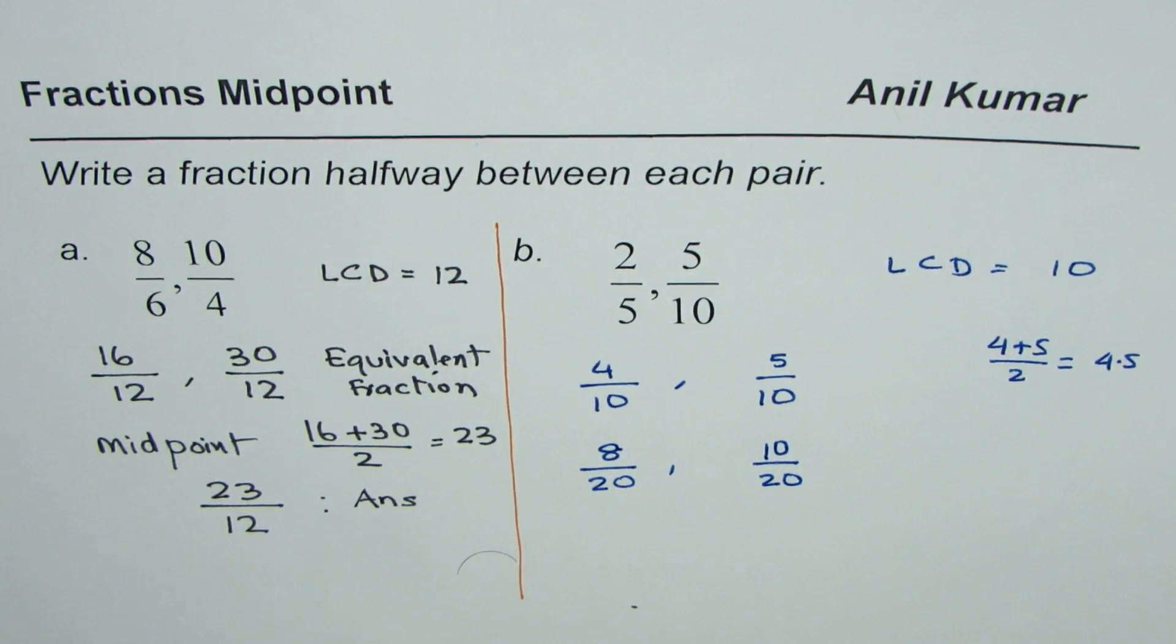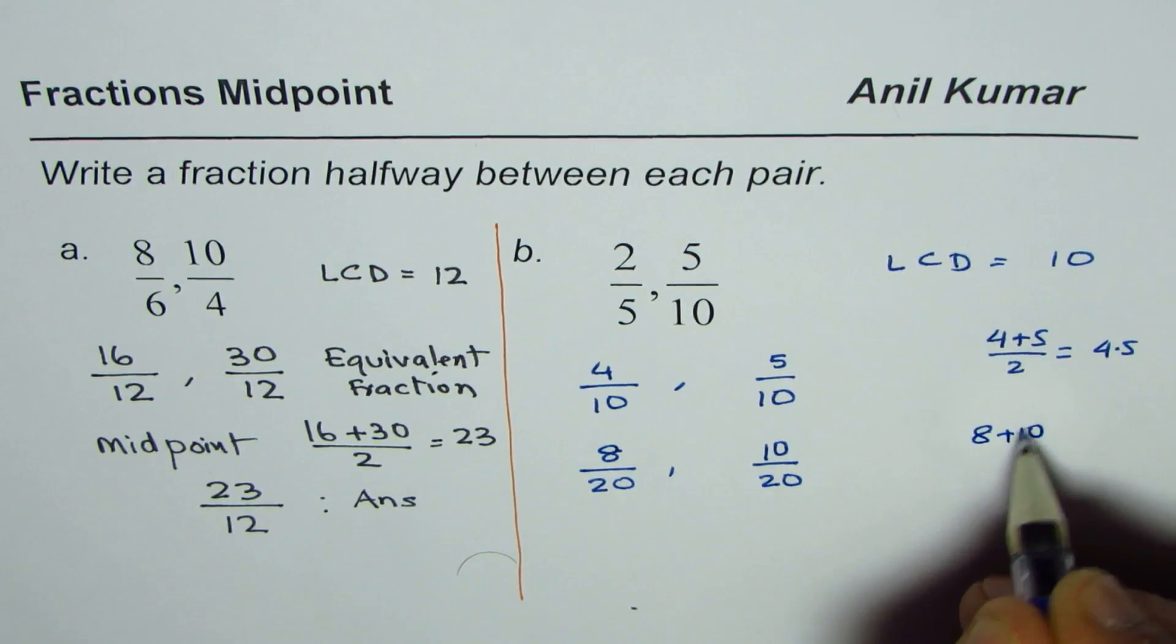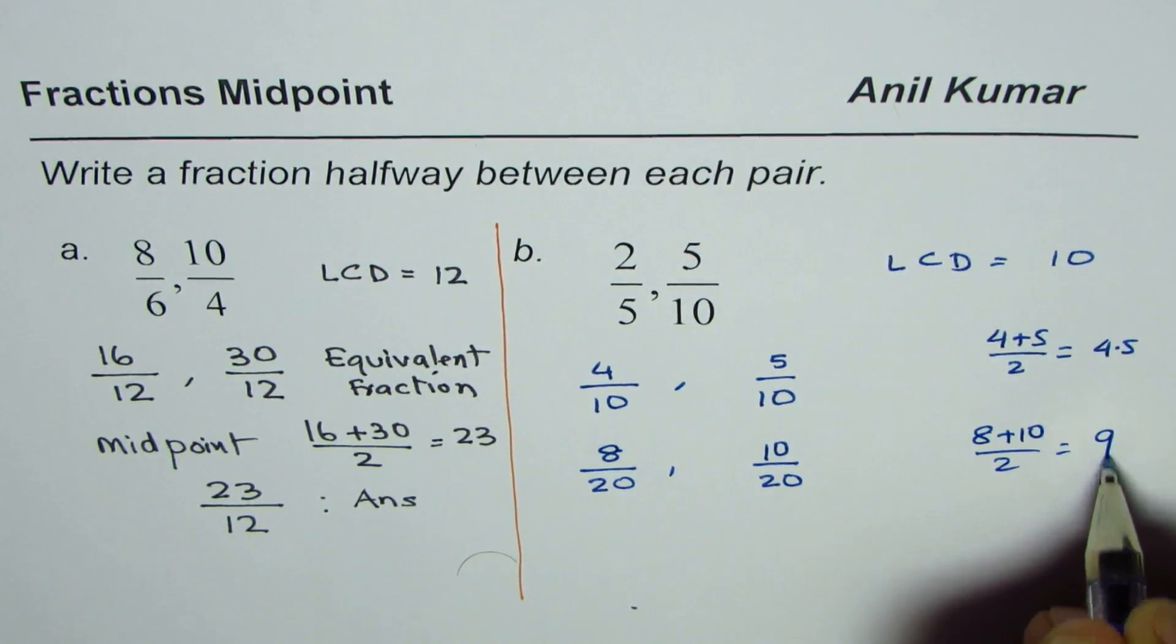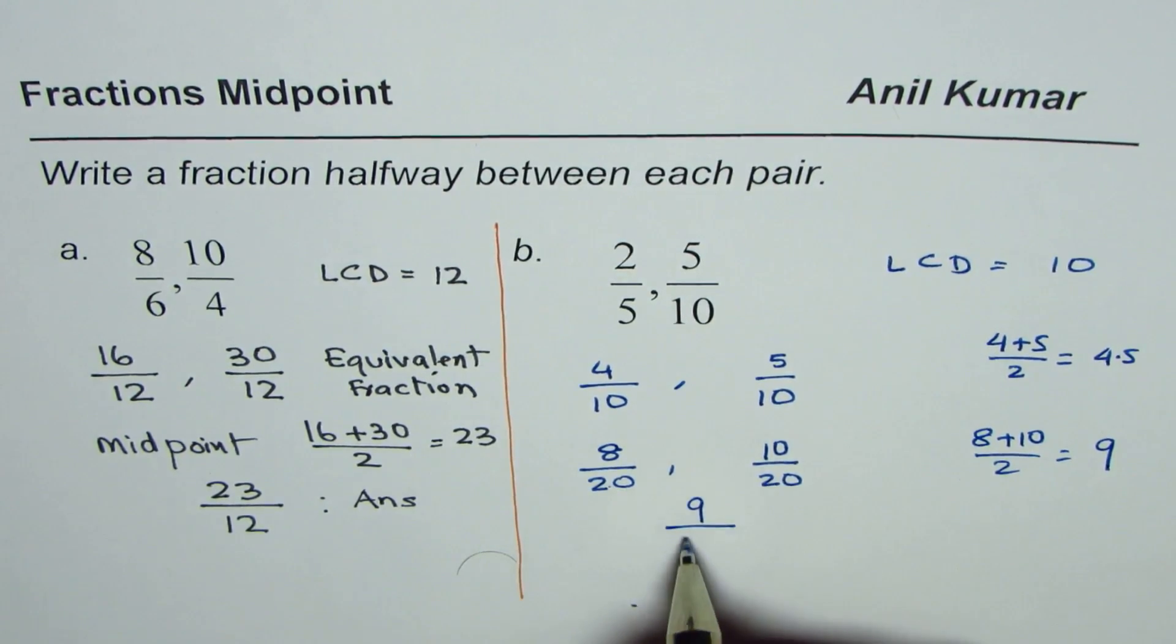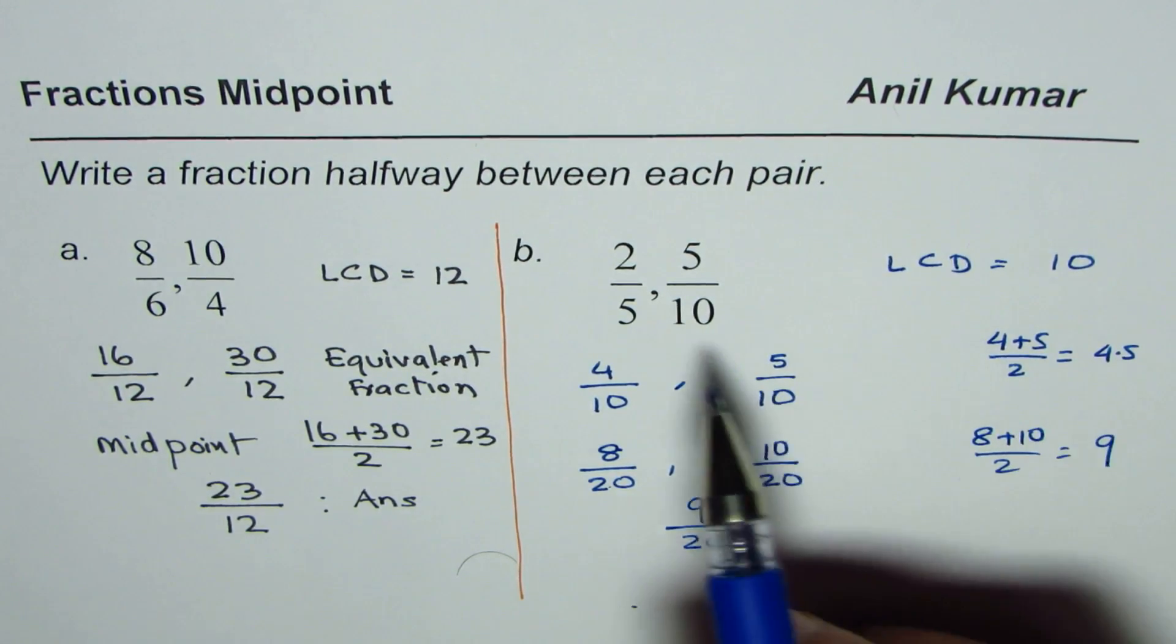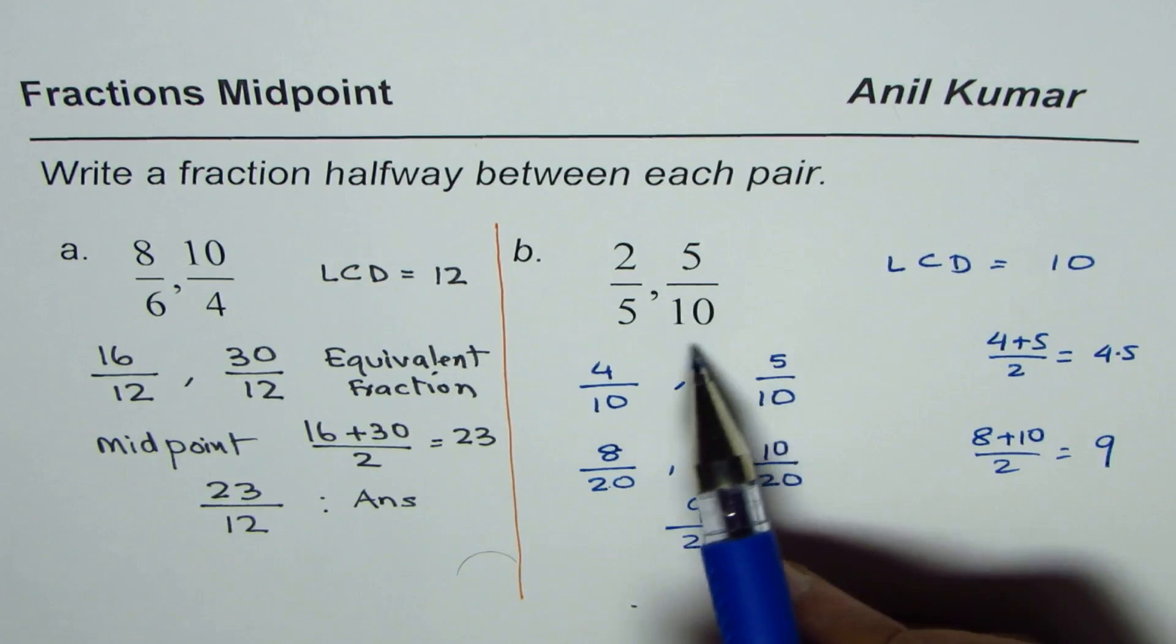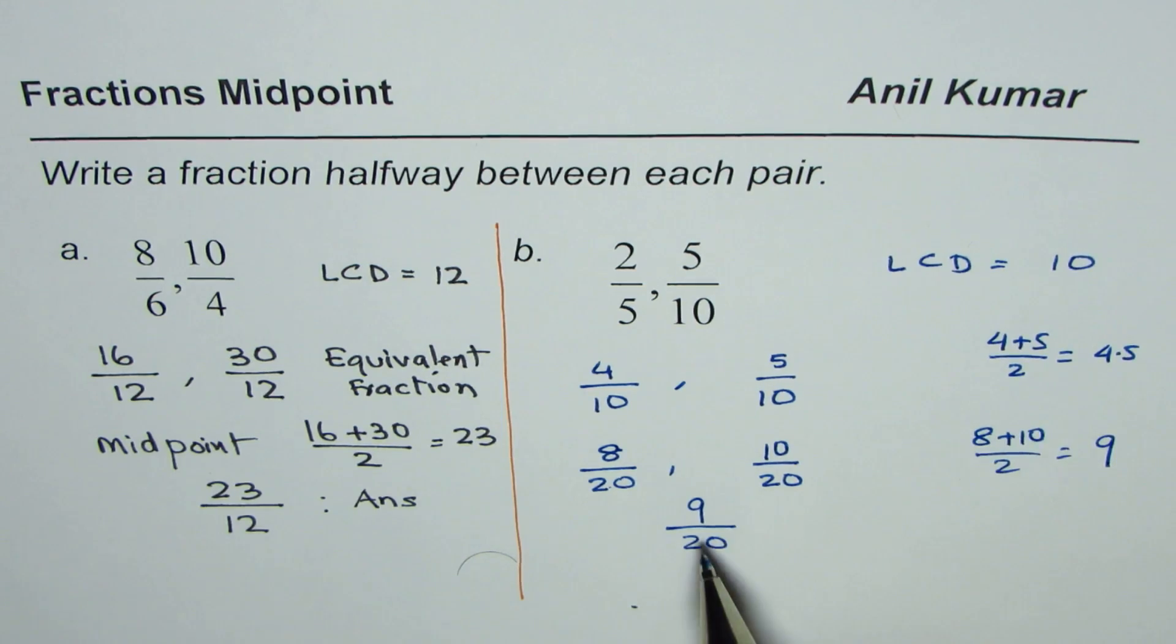Now it is kind of easier to find the midpoint. Midpoint is between 8 and 10. So now 8 plus 10 divided by 2 gives us 9 and the midpoint is 9 over 20. So at times when you get a decimal number you could go to higher denominator so that you avoid decimal in writing.